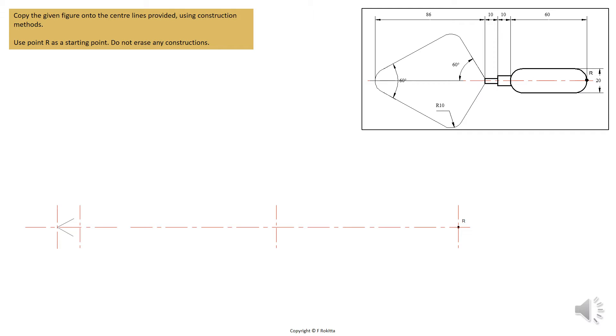On this page you will find a 2D schematic drawing given to you on the top right hand side. This is a preview of the model that you need to construct onto the center lines provided to you in the drawing space. Starting point R is given to you at the far right hand side of the center lines.